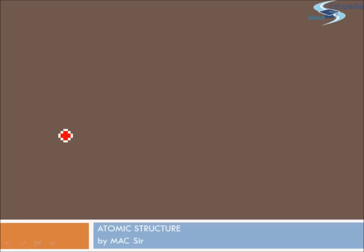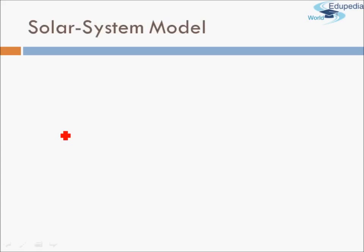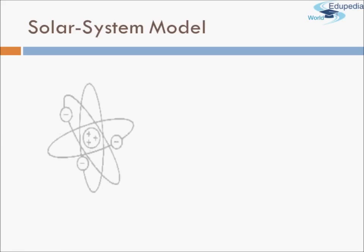Hello everyone, thanks for watching Edupedia World videos. I'm Manish Agrawal, and in this session on atomic structure we'll be studying Rutherford's atomic model. As we have already seen the Rutherford's experiment involving alpha particle scattering on gold foils, we saw the conclusions and observations. Based on those observations he devised a model for atomic structure, which is often called the solar system model because it somewhat looks similar to a solar system.